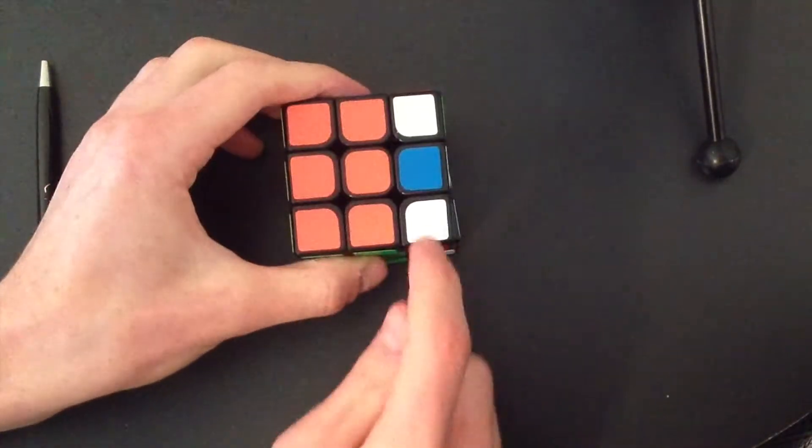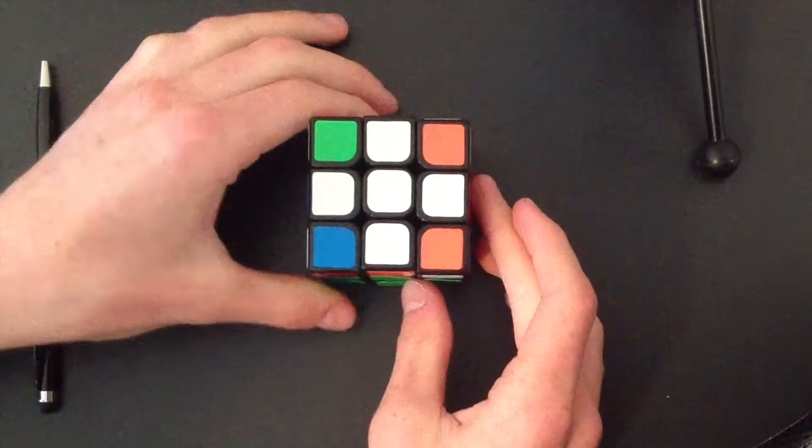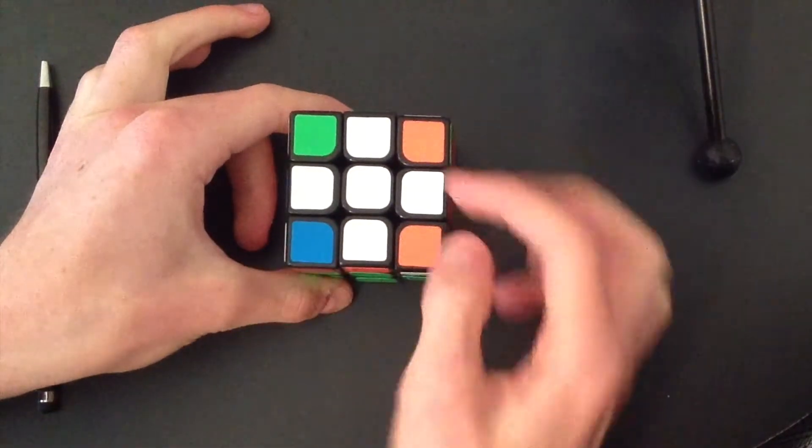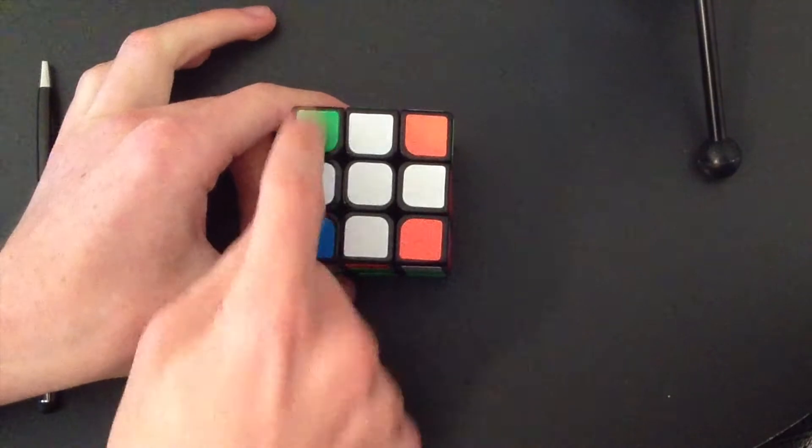So, the first case looks like this. We have this OLL, box in front and on the side. And you recognize it by the fact that these two are opposite and these two are the same. I call that a block. So there's a block here and these two are opposite.